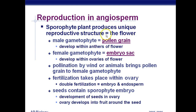The sporophyte plant produces unique reproductive structures. The male gametophyte is the pollen grain. The female gametophyte is inside the embryo sac within the ovule of the flower — so ovary, inside that are ovules, inside that is the embryo sac. Pollination by wind or animals brings the pollen grain to the female gametophyte — pollen is sticky, sticks to bees and birds, and is lightweight, spread by wind. Fertilization takes place within the ovary with double fertilization: one sperm fertilizes an egg becoming a zygote, the other sperm fertilizes two polar nuclei to become a triploid endosperm.